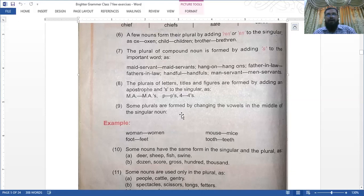Number nine: some plurals are formed by changing the vowels in the middle of the singular. For example: woman/women, foot/feet, mouse/mice, tooth/teeth.